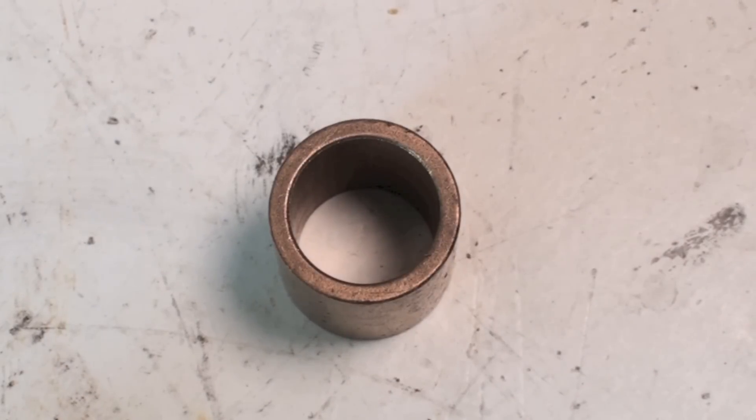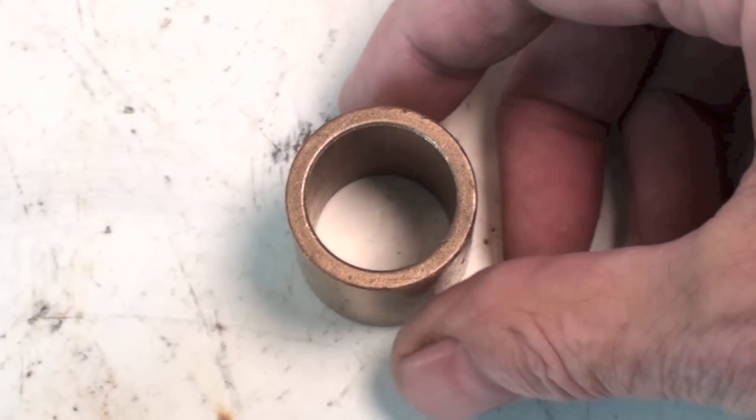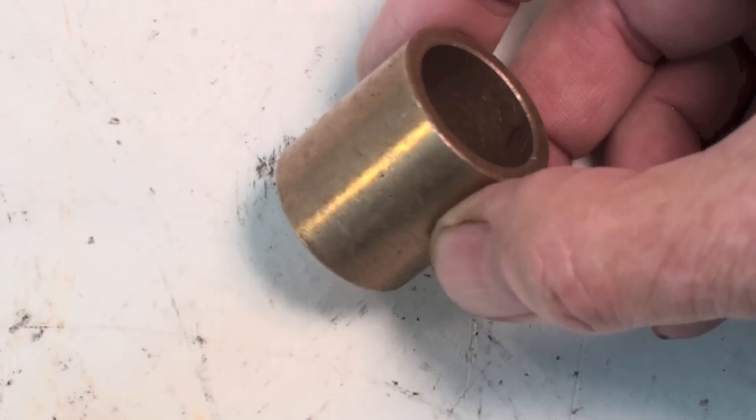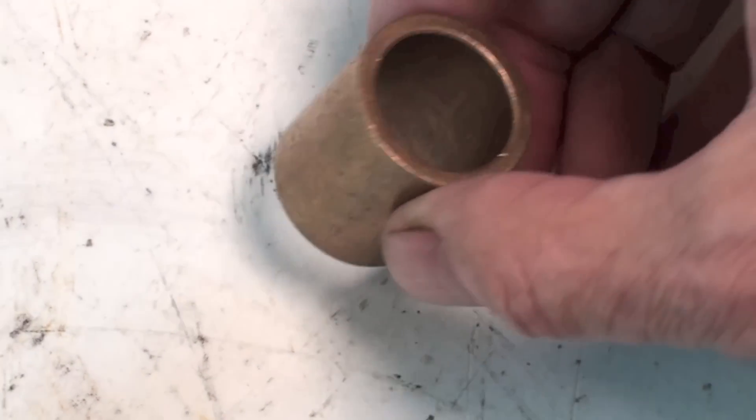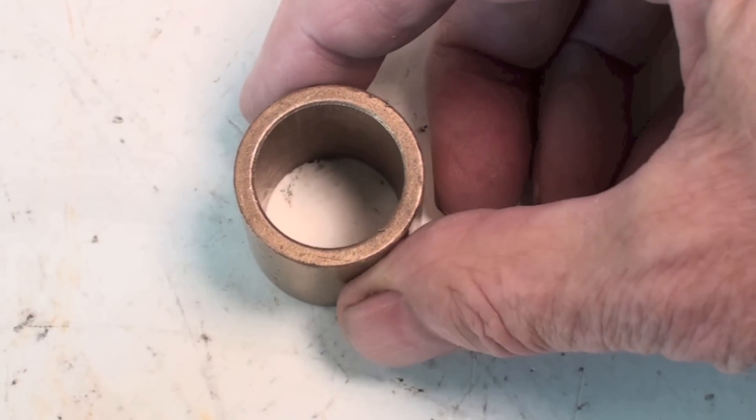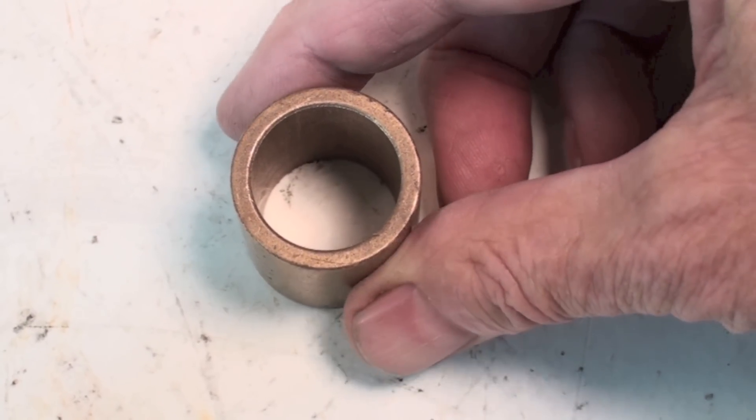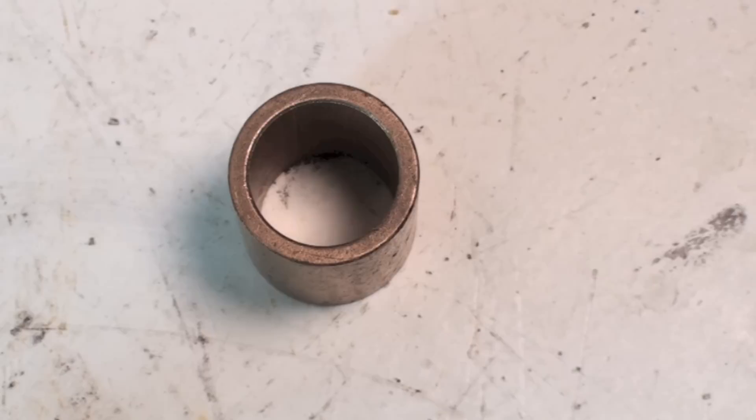Okay, this is the bushing out of the holder and this is bronze and it is sintered bronze. Sintered bronze is really just bronze that has been ground up into little pieces and then it's hydraulically pushed back together.